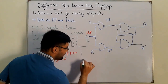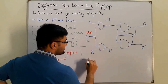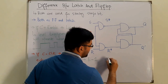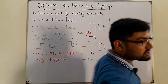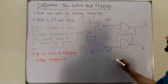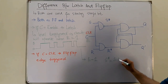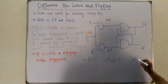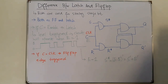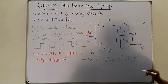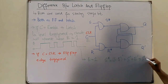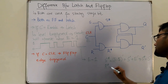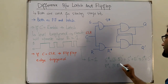When the enable is high, the value of S-star is S AND enable, whole complement, which equals S complement OR enable complement. Since enable is 1, enable complement is 0, so S-star equals S complement. Similarly, R-star equals R complement when enable is 1.